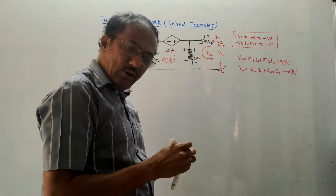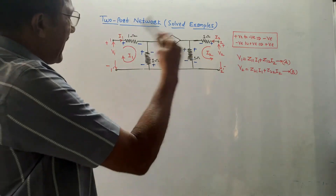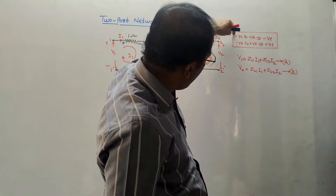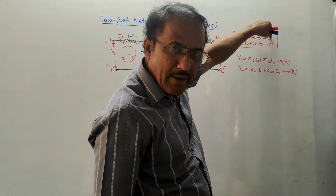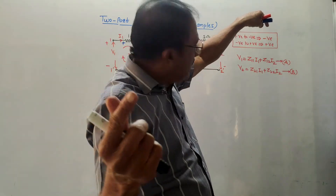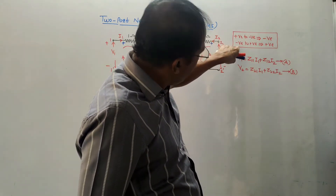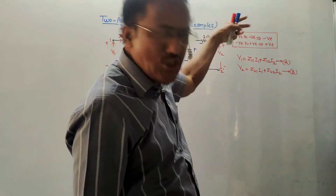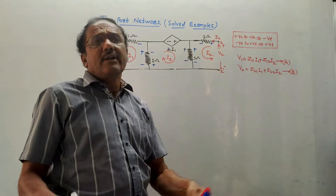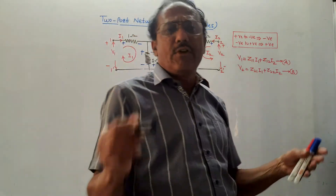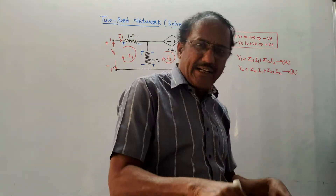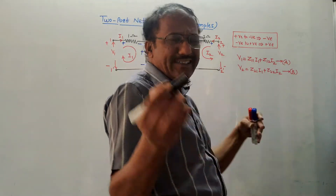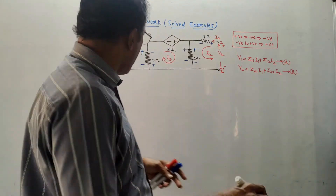For V2, polarities are already given. To apply KVL, we use two simple rules: if you are moving from positive to negative, mark the sign negative; if you are moving from negative to positive, consider it positive. These are the conventions used for voltage drops. If you haven't watched the video on KVL, do watch it — I will provide the link in the description box.